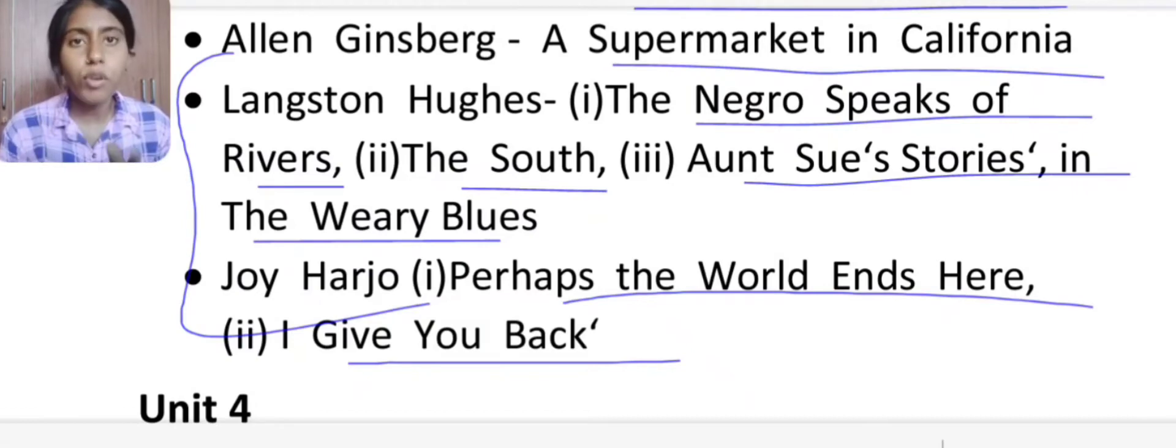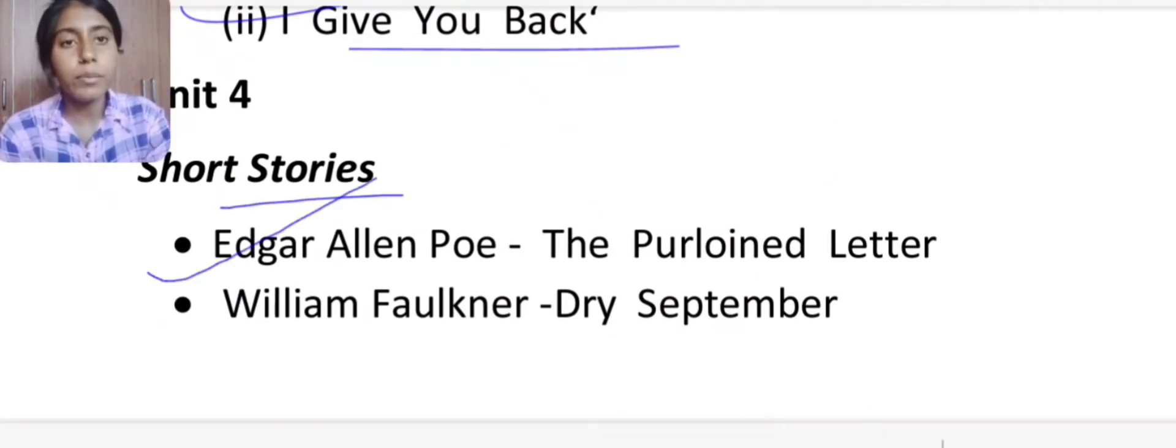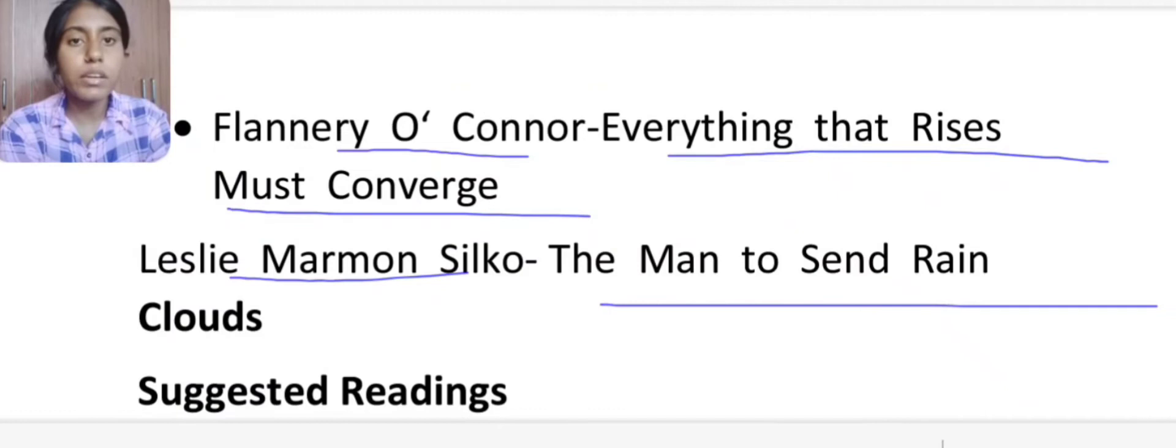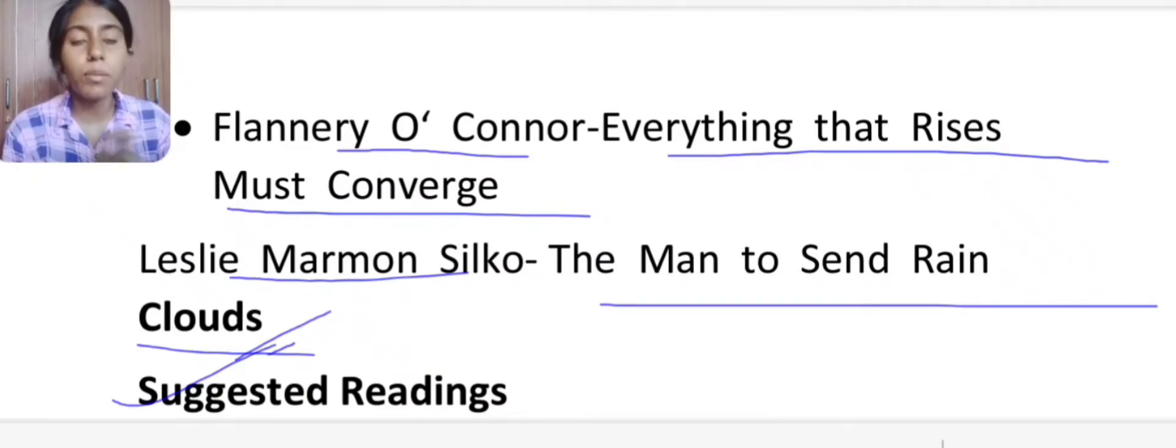Then Unit 4 you have to read the short stories. Edgar Allan Poe's The Purloined Letter, William Faulkner's Dry September, Flannery O'Connor's Everything That Rises Must Converge, and Leslie Marmon Silko's The Man To Send Rain Clouds. Besides suggested readings, if you want to discuss the suggested readings portion, tell me in the comment box. This is the syllabus of American Literature.